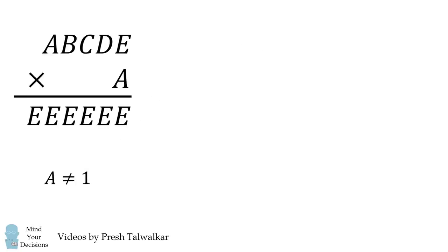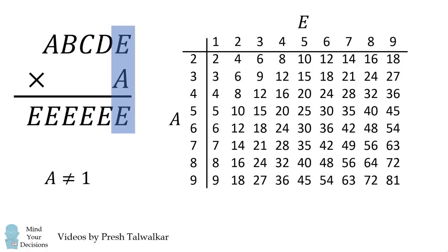From here, let's consider the multiplication in the units column. We have E multiplied by A is a number that has a units digit equal to E. What numbers could result in this possibility? We can work through the cases or you can consult a multiplication table. From here, we can actually see which cases have E multiplied by A resulting in a number that ends in the digit E.